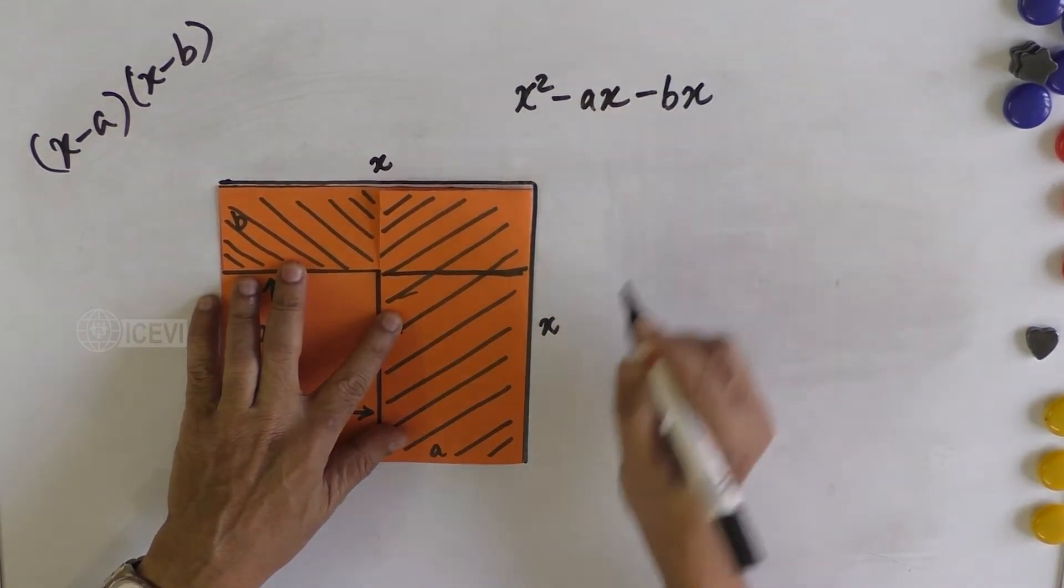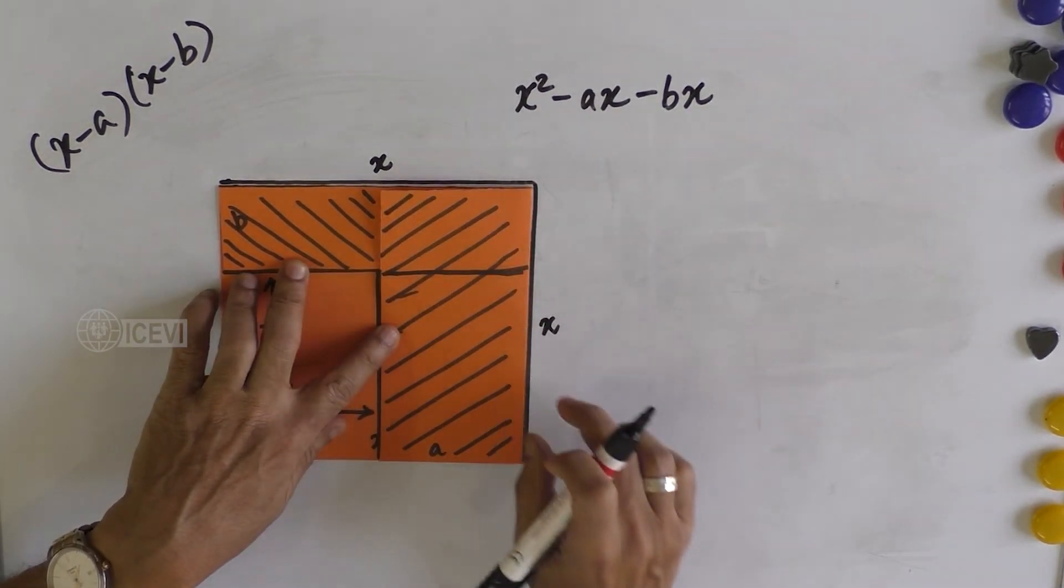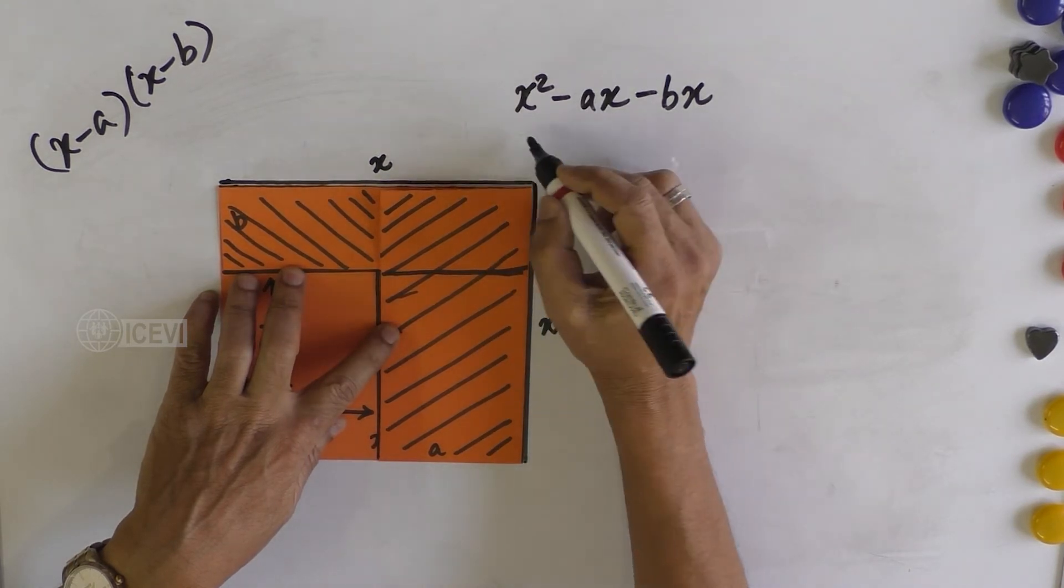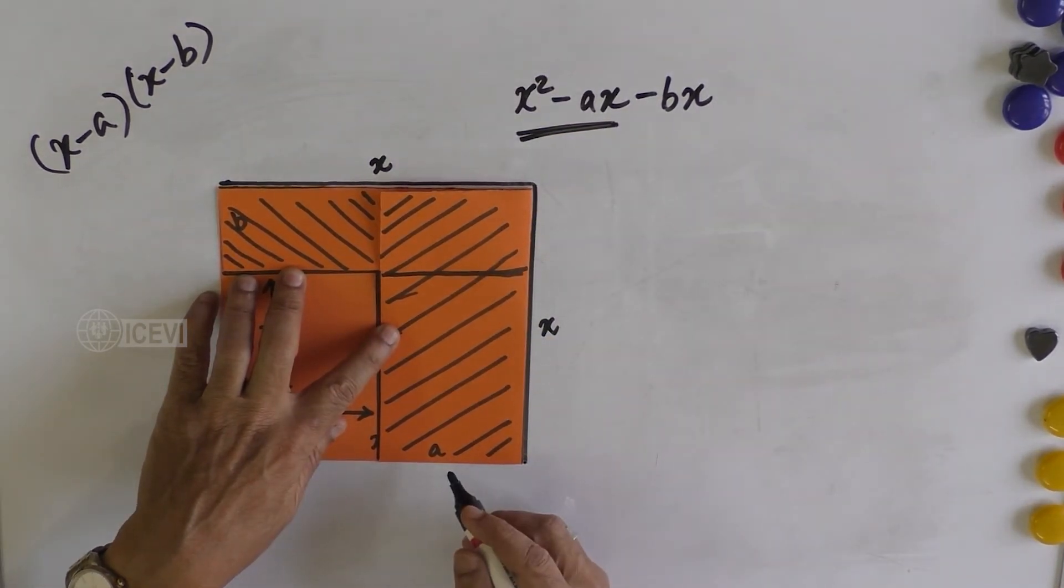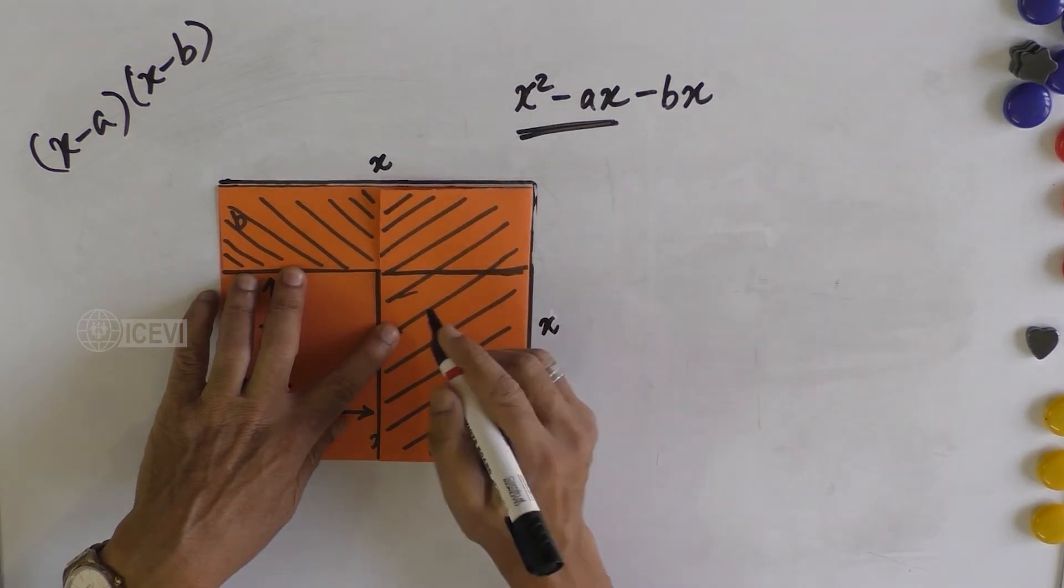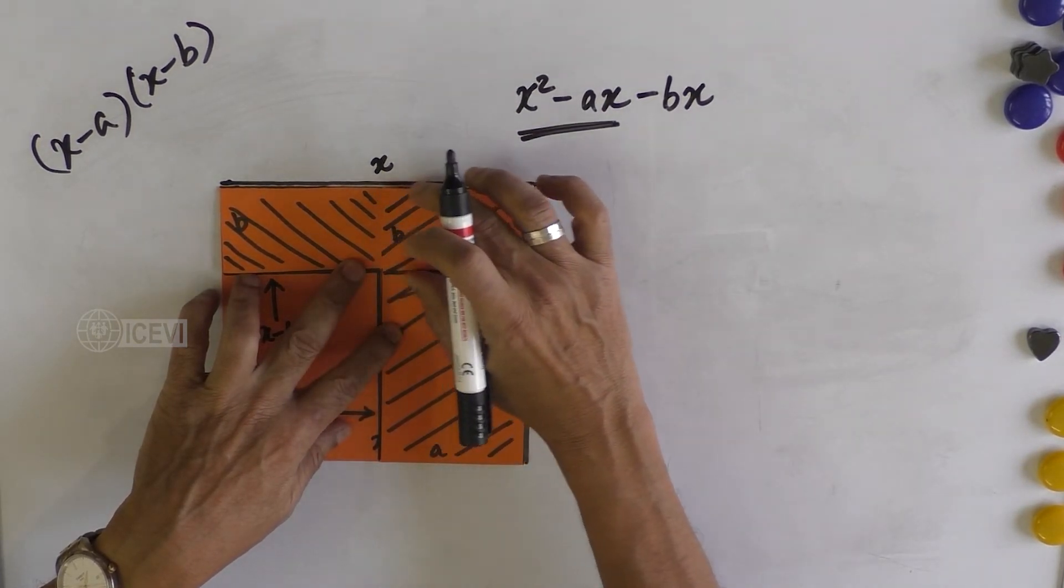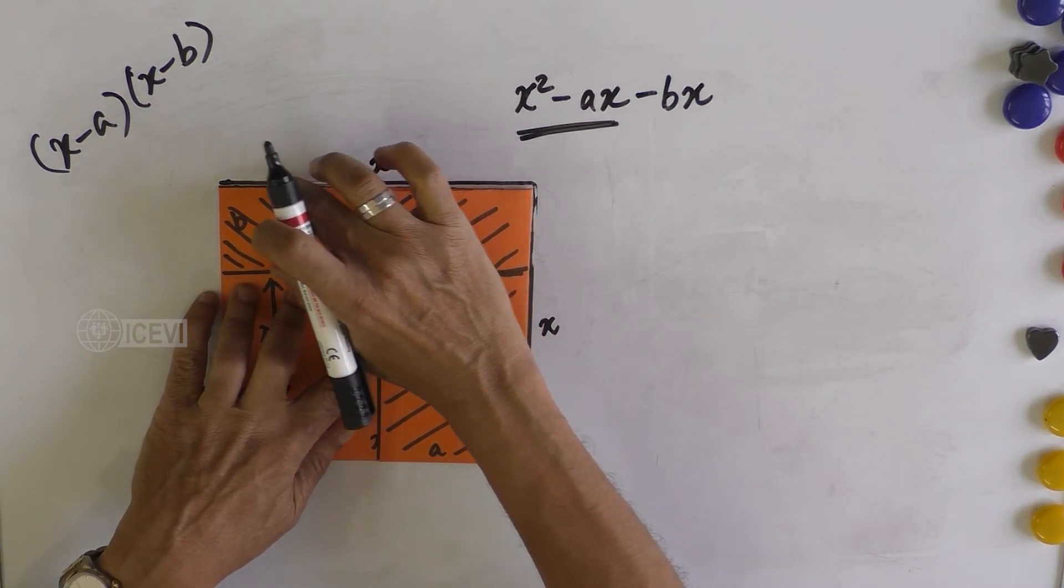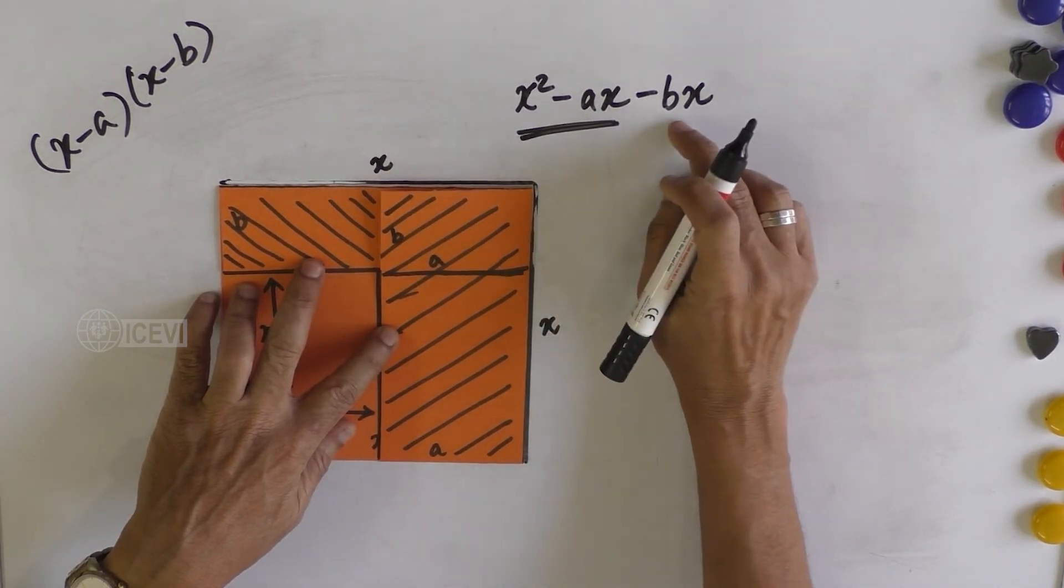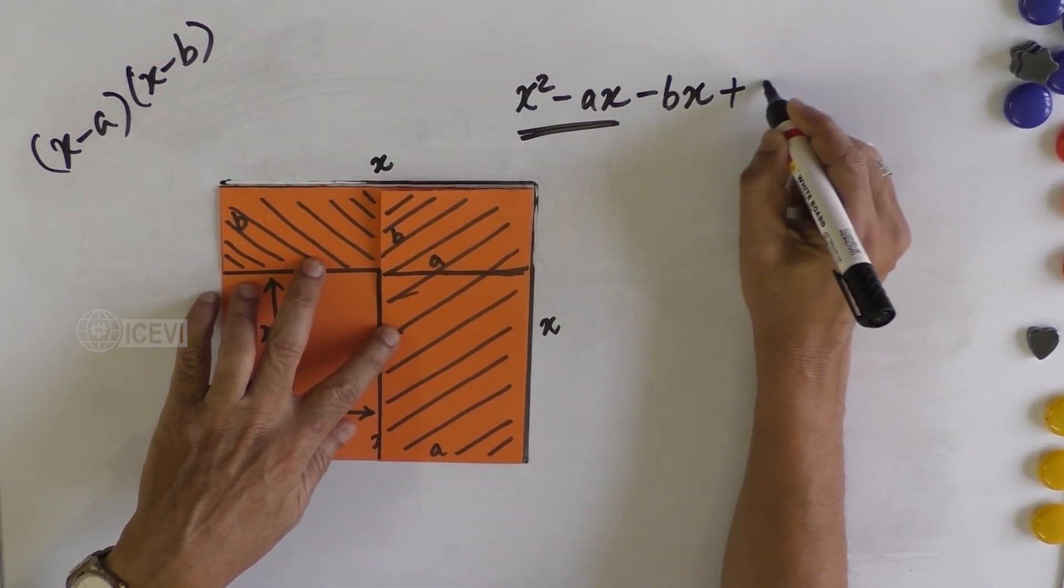We have subtracted AX from X², now we have subtracted the full length BX. But the portion in the corner - one side is B and the other side is A. Instead of subtracting a small portion, you have subtracted the full portion which is BX. So to compensate that, you have to add AB to the value.